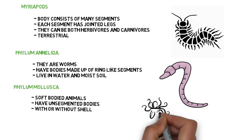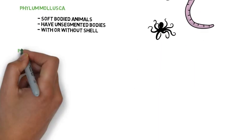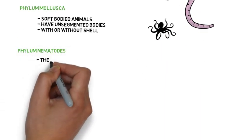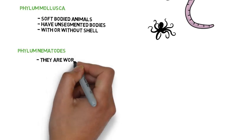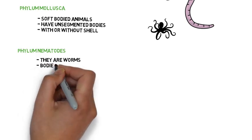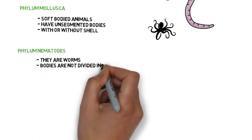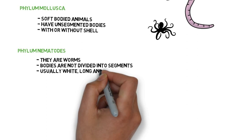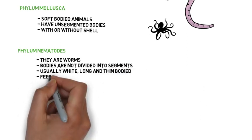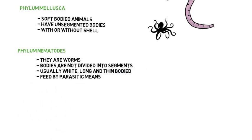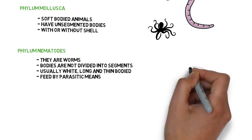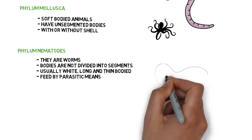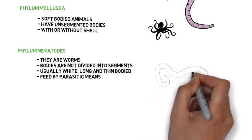Phylum Nematodes. They are worms. Their bodies are not divided into segments. They are usually white, long, and thin-bodied, and they feed by parasitic means. Examples of nematodes are hookworm and roundworm.